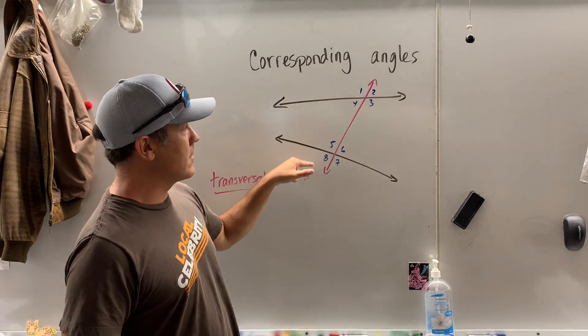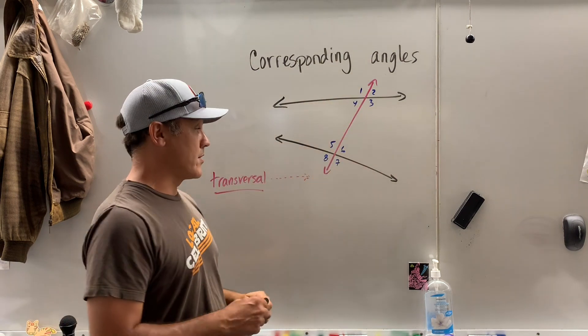Here we have a bunch of angles. I've got two lines and this is the transversal.